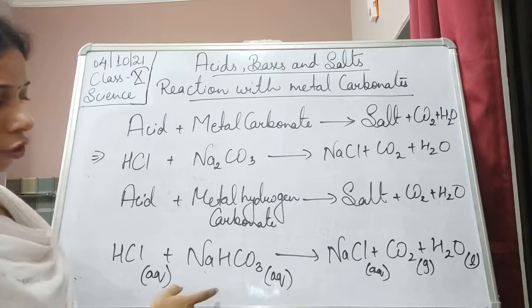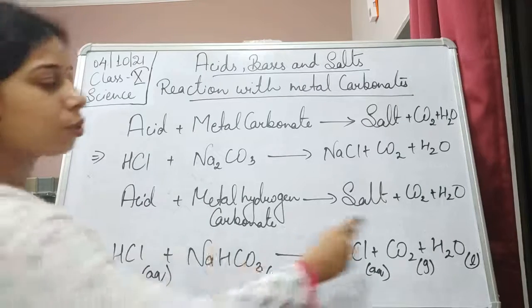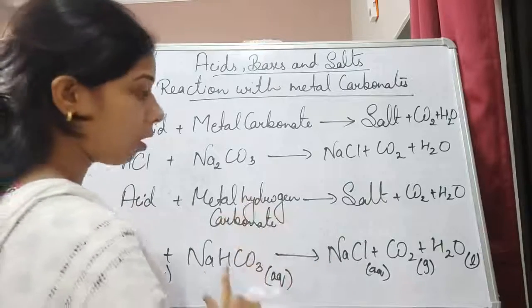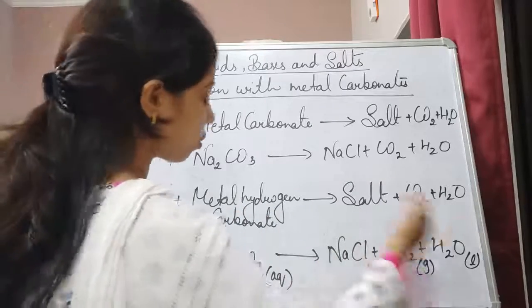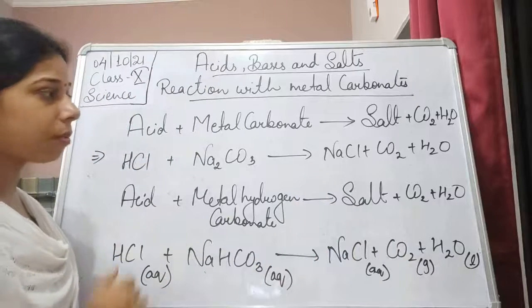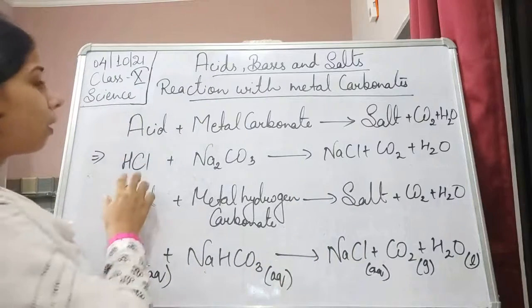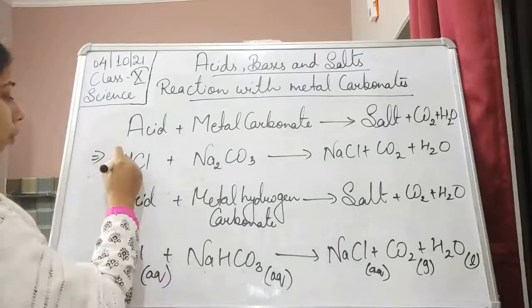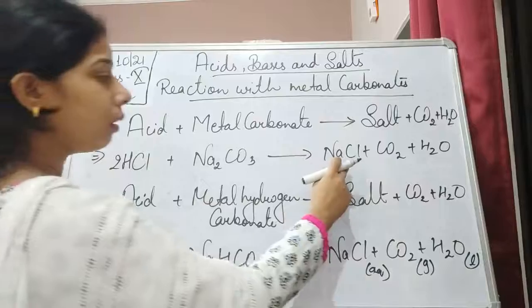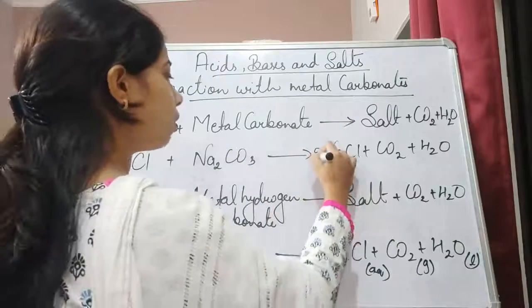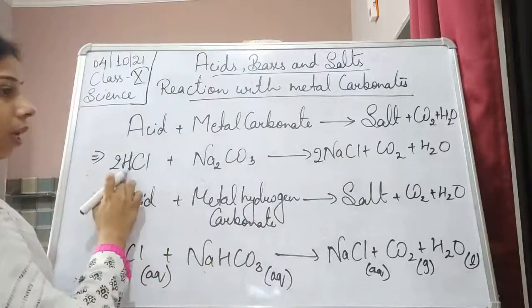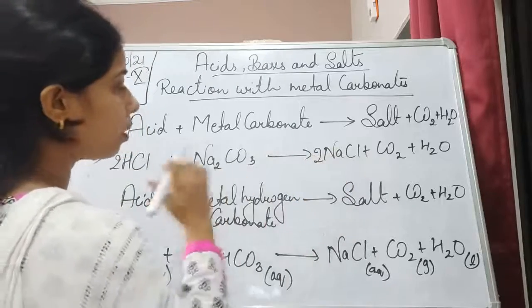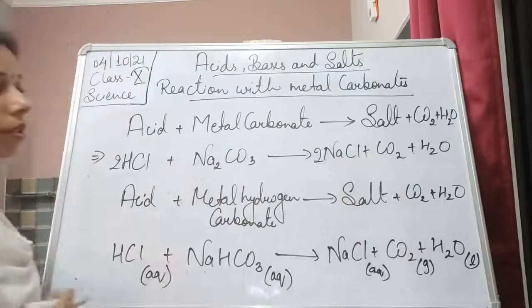Now, whether this reaction is balanced or not. There are two hydrogen here and two hydrogen there. Sodium is one on both sides. Chlorine is one on both sides. Carbon is one on both sides. Oxygen is three on both sides. So it is balanced. Now for the Na2CO3 reaction — hydrogen is one here and two here, so we put two. Now two chlorine, two sodium, carbon is one, oxygen is three. Now it is balanced.